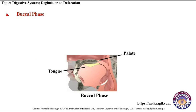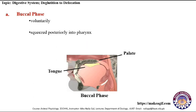The first phase is the buccal phase. This phase is voluntary in action. When food is ingested, it is mechanically broken down by mastication and chemically by salivary enzymes. When the bolus is ready for swallowing, it is squeezed posteriorly into the pharynx by the upward and backward movement of the tongue.